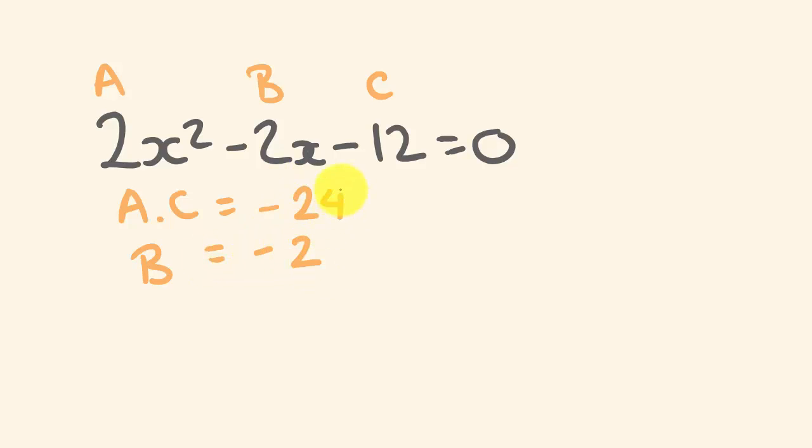What numbers multiply to give negative 24? But then you can put together to get negative 2, 4, and minus 6. Again, because if you multiply 4 and minus 6, you get negative 24. But if you go 4, take away 6, you get negative 2. So what do we do?